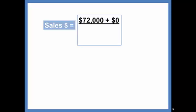In the numerator, you're going to have total fixed costs, $72,000, plus desired profit of zero. And you're going to divide by the contribution margin ratio of 30%. This tells us that at the breakeven point, total sales dollars must be $240,000.